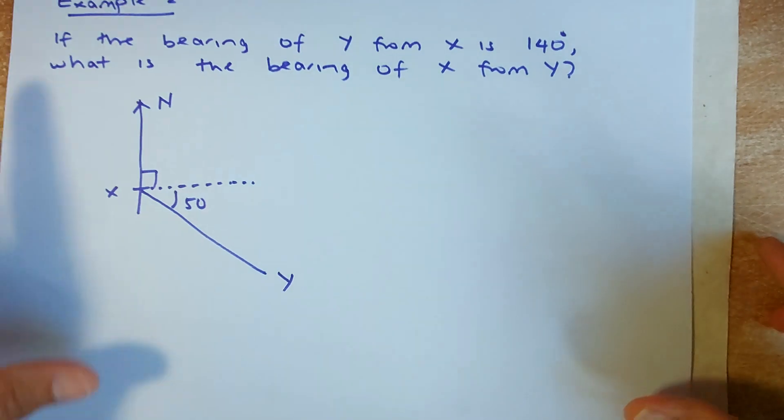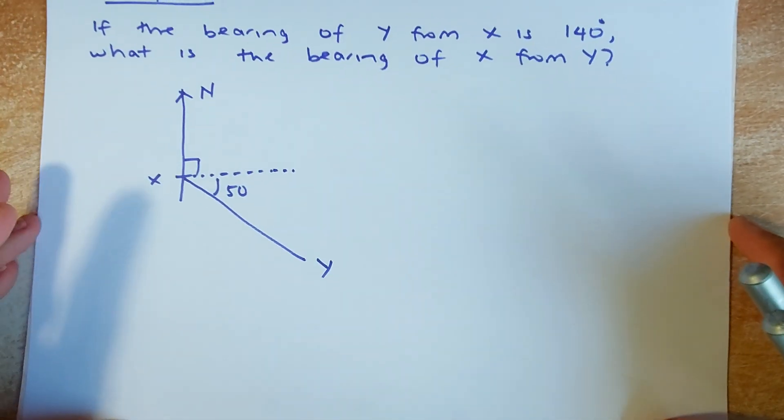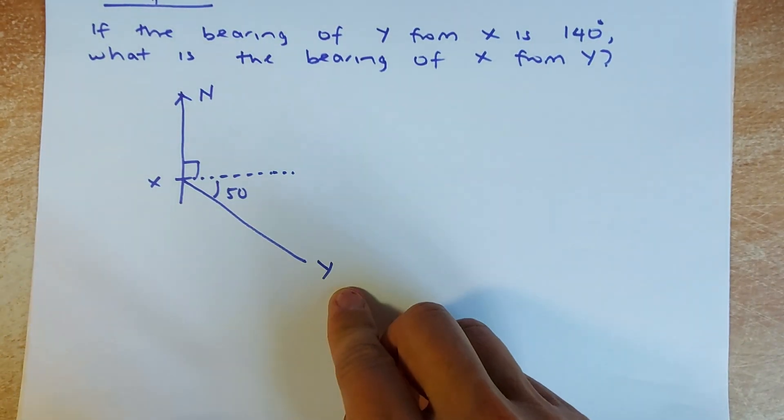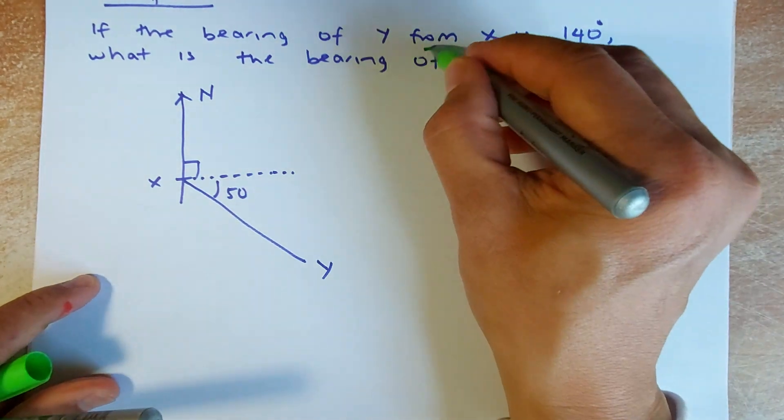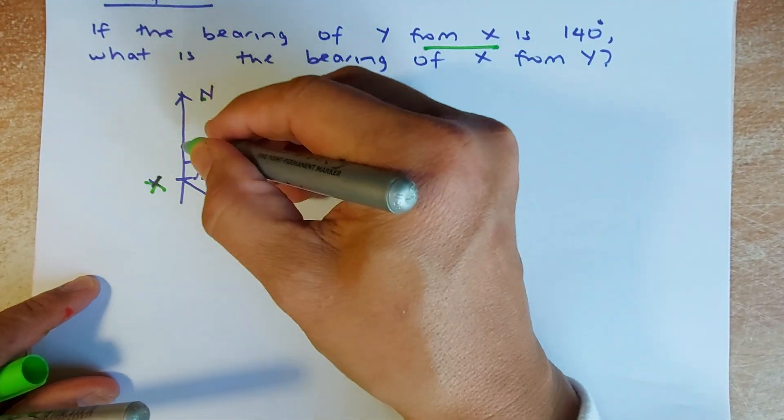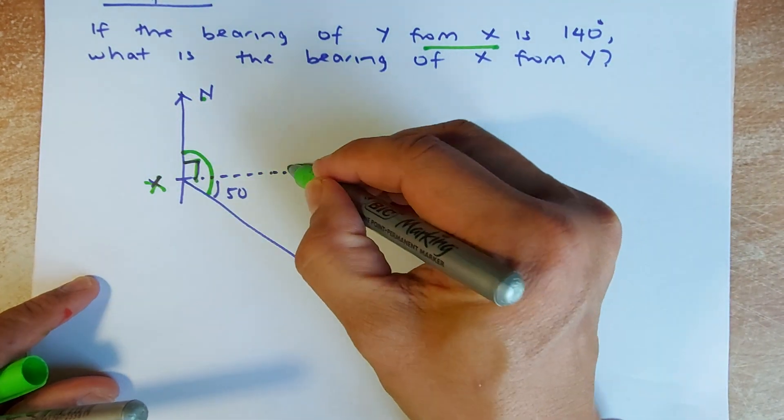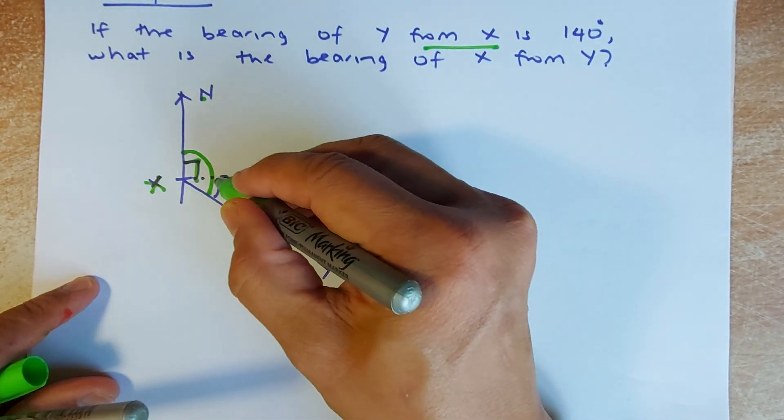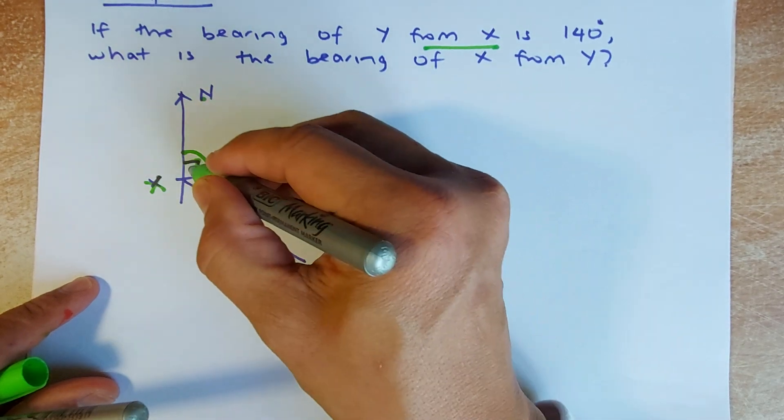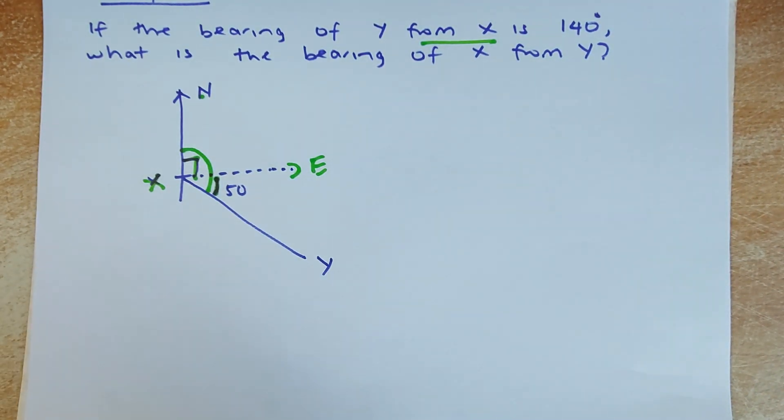The next one is similar. Now the bearing of Y from X. If Y is here, the bearing of Y from X, so X is the starting point. We draw the north and the measured angle is going to be 140. If this is 90 degrees, the other angle has to be 50 because 50 plus 90 is going to add up to 140.